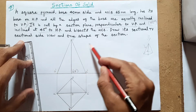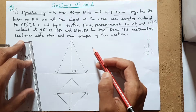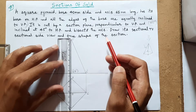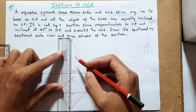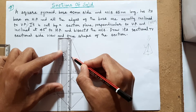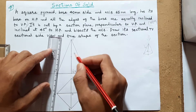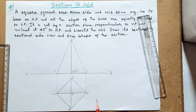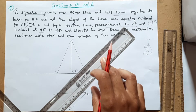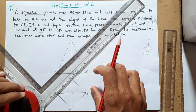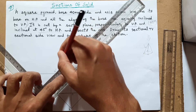With respect to HP it is 45 degrees, so it should be drawn at 45 degrees inclined. You can take 45 degrees like this or in this manner also. Where to draw it - it bisects the axis: 65 mm so the midpoint is 32.5 mm. The midpoint comes somewhere here, and from this point the cutting plane should pass making an angle of 45 degrees, parallel to the existing 45-degree edges. So here goes our cutting plane.